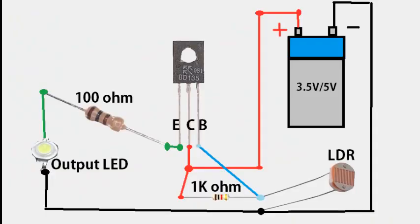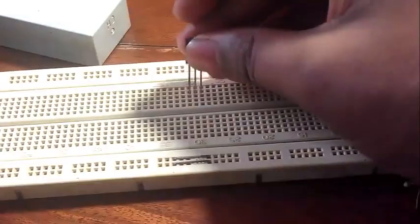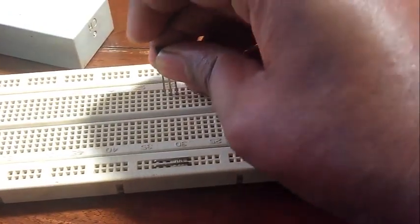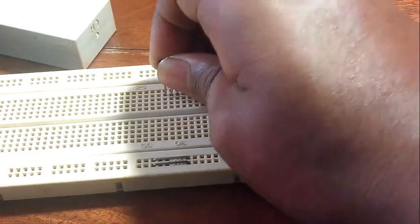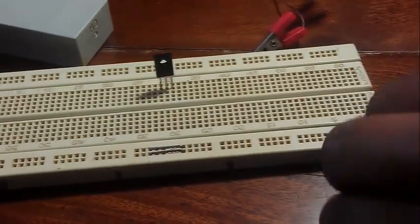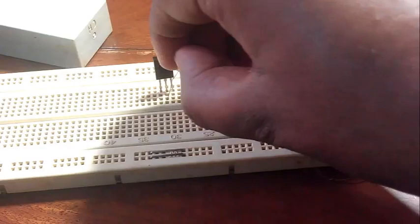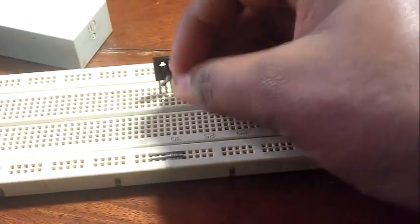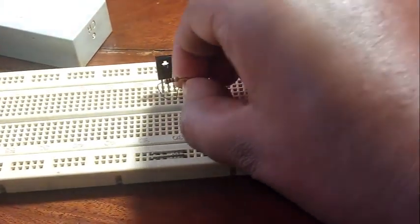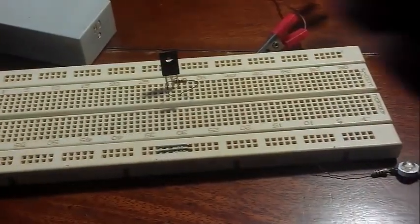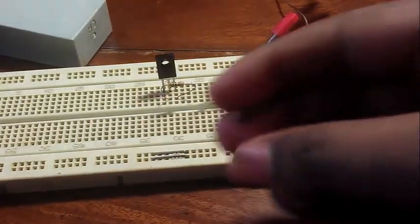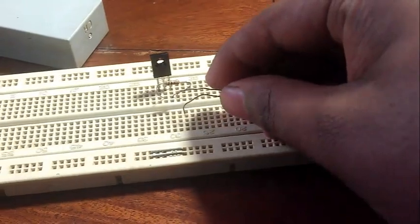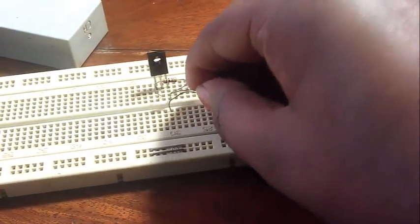Here you can see my circuit diagram — it's a very simple circuit. Now let's make the circuit. First, set the transistor in the breadboard. Then connect the 1 kilo ohm resistor with the collector and its base.